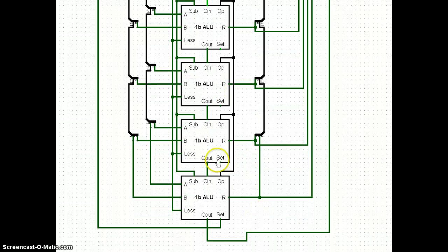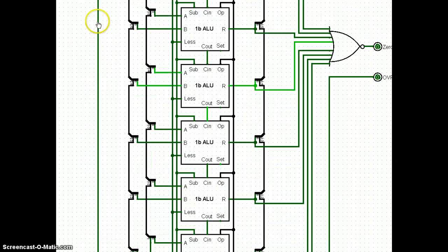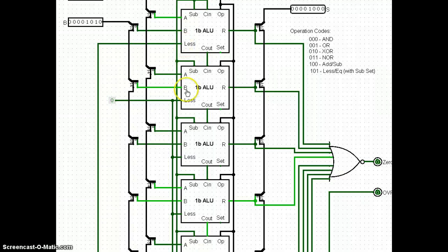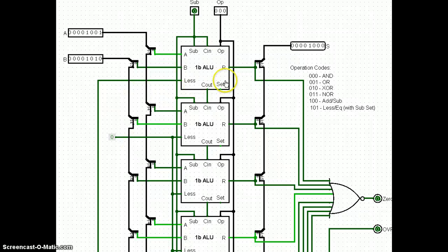Notice that most of these ALUs have the set bit not connected to anything, except for the very last one — the most significant bit. If it's set, it runs back up to the top and is connected to the less than input. All other less-than bits are connected to zero. So when I want to do less than or equal, I set it up so I'm doing a subtraction between A and B, and the less than signal will propagate back through depending on whether A is less than or greater than B.